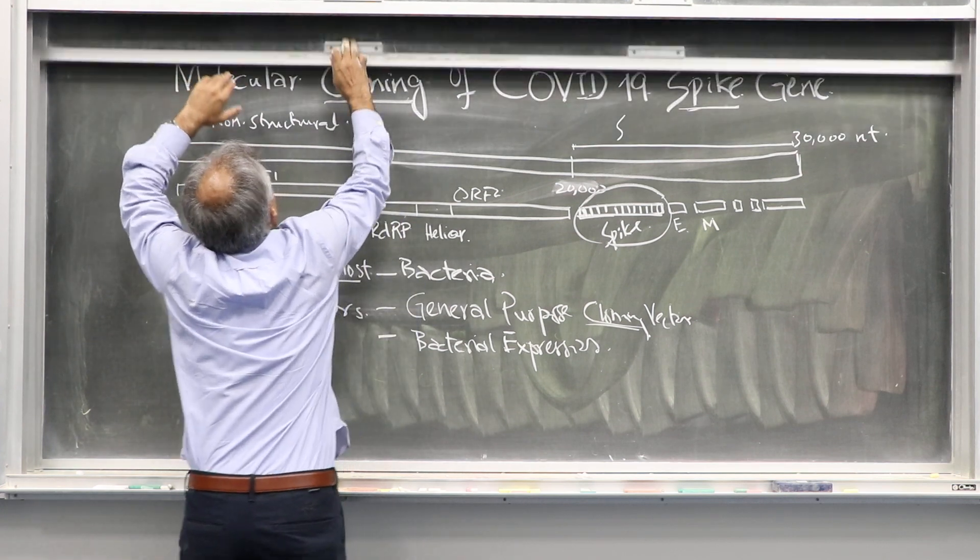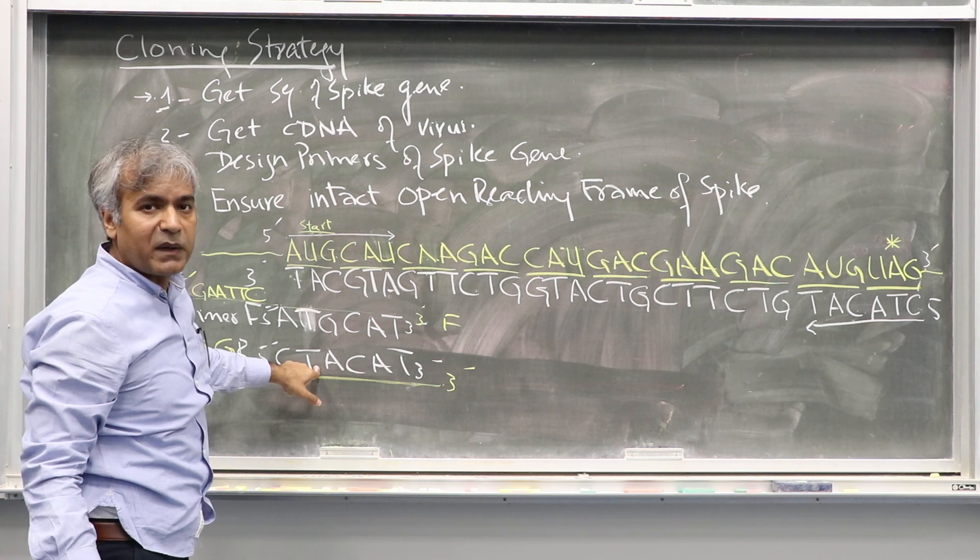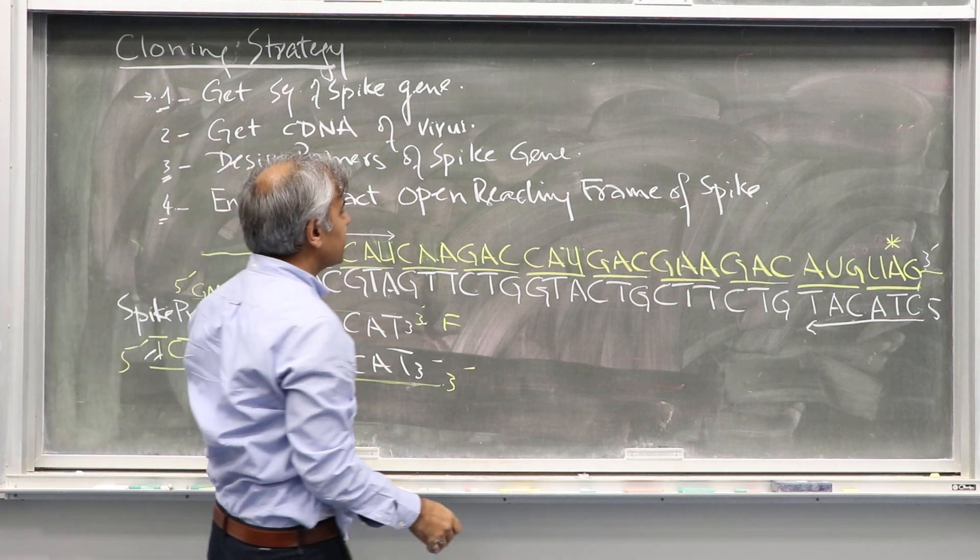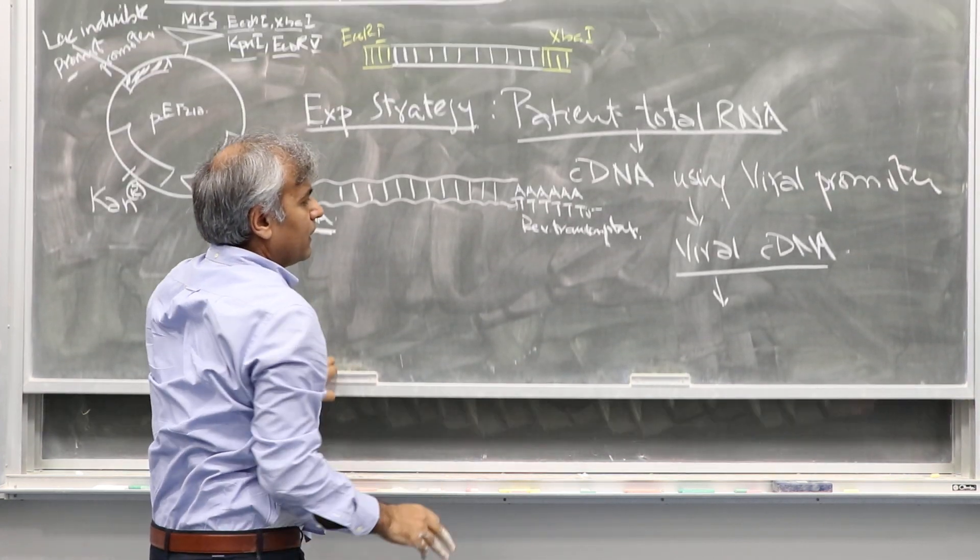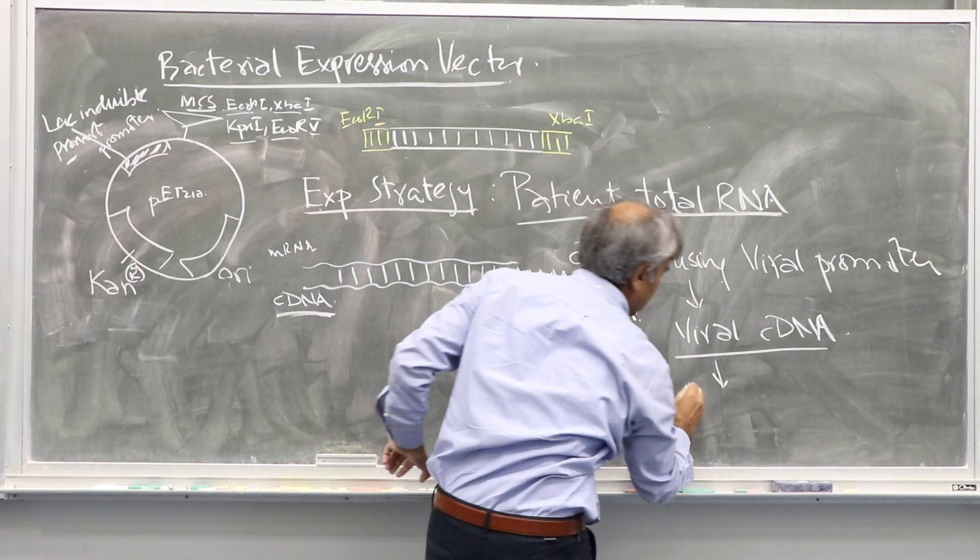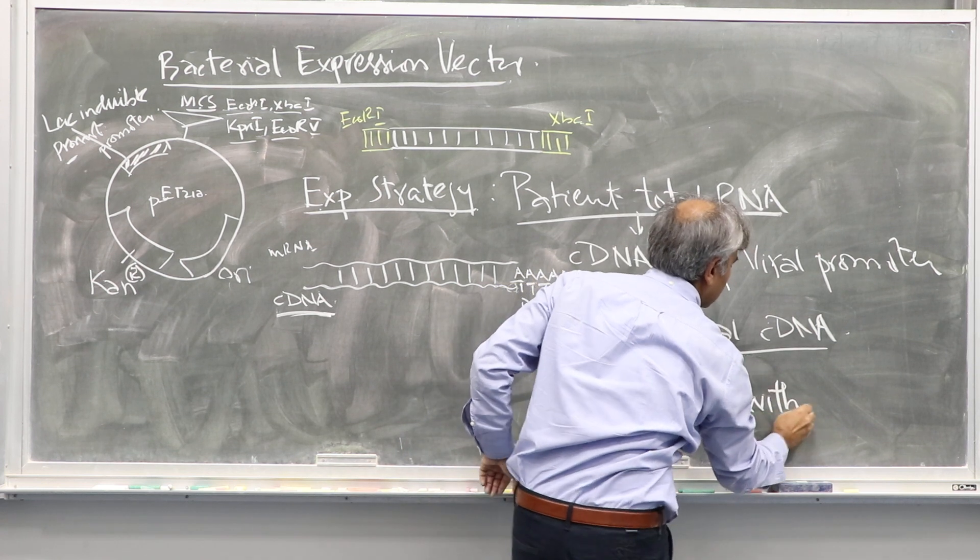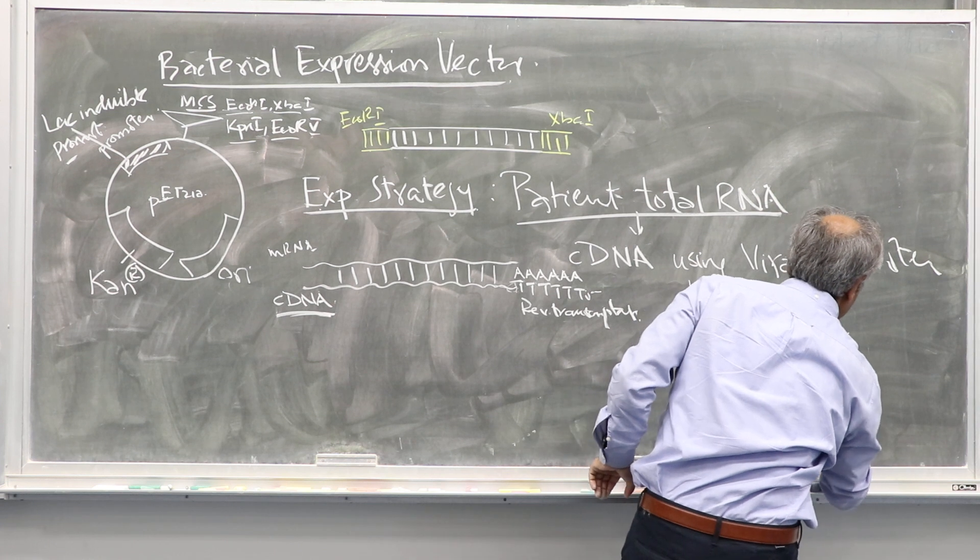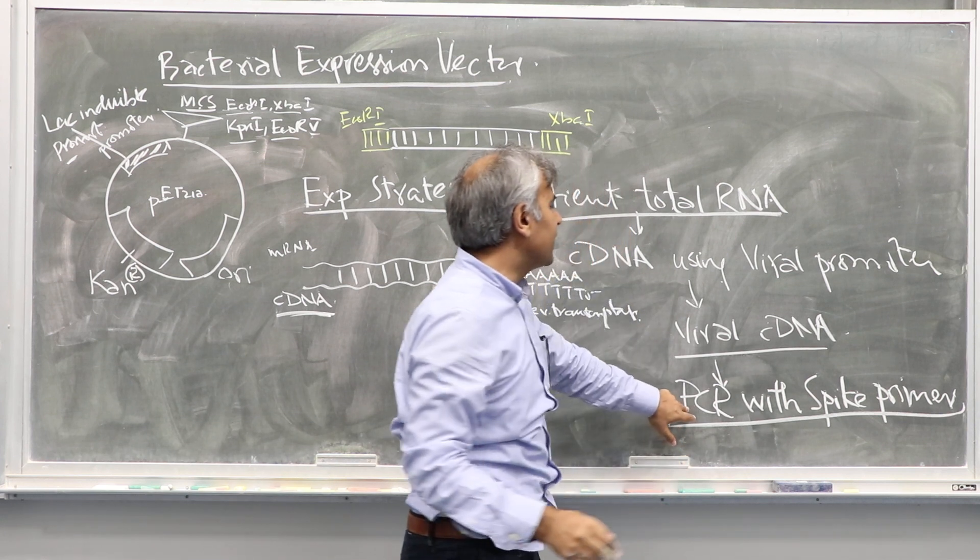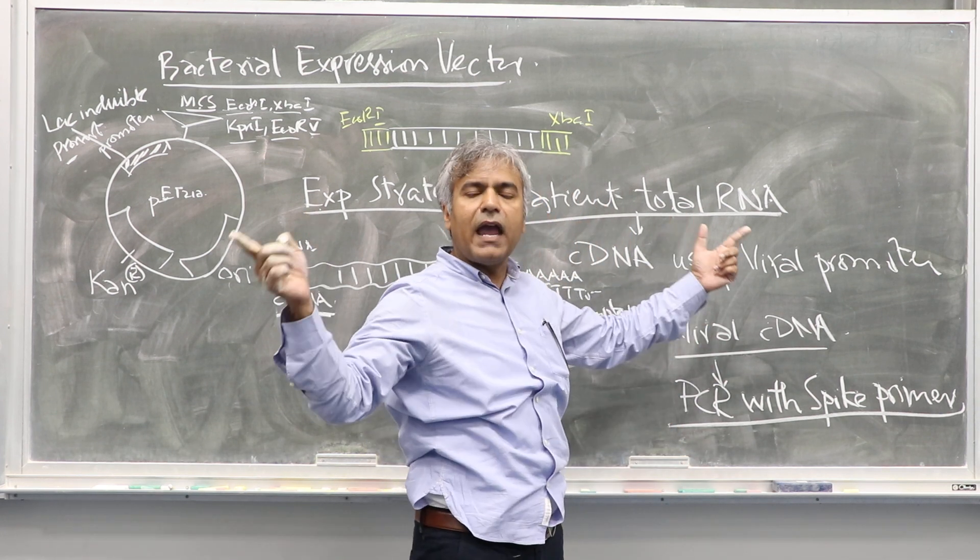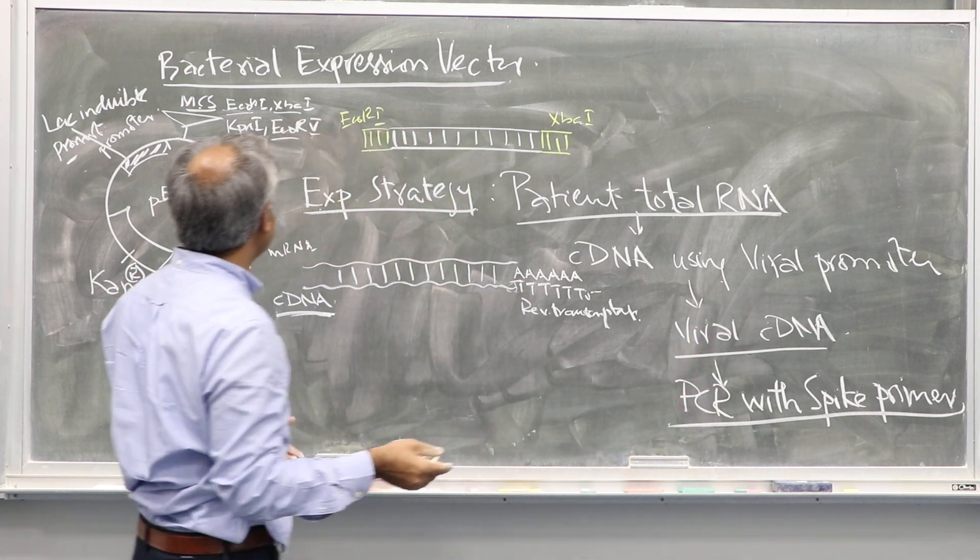We will use spike-specific primers, and these spike-specific primers will amplify - we do PCR with spike primers - and that will give you amplification of the spike gene. That spike gene can be then cloned in a general purpose cloning vector first.